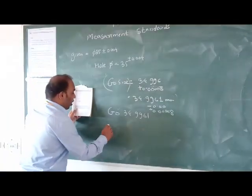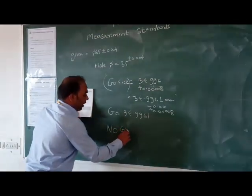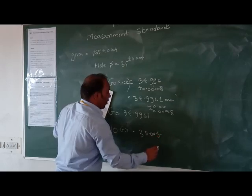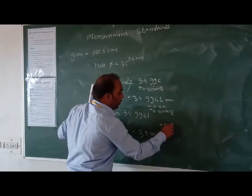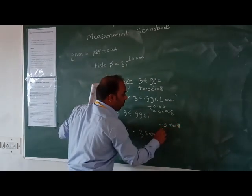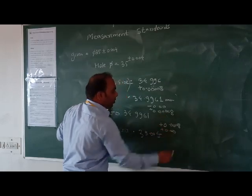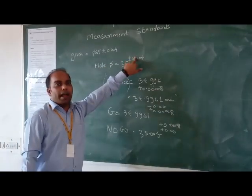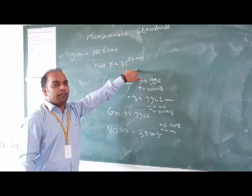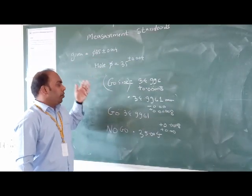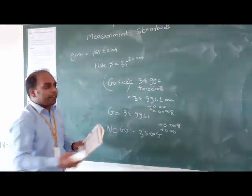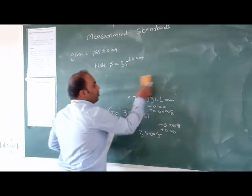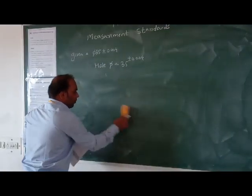For no-go gauge, we calculate using the upper limit with appropriate tolerances applied.